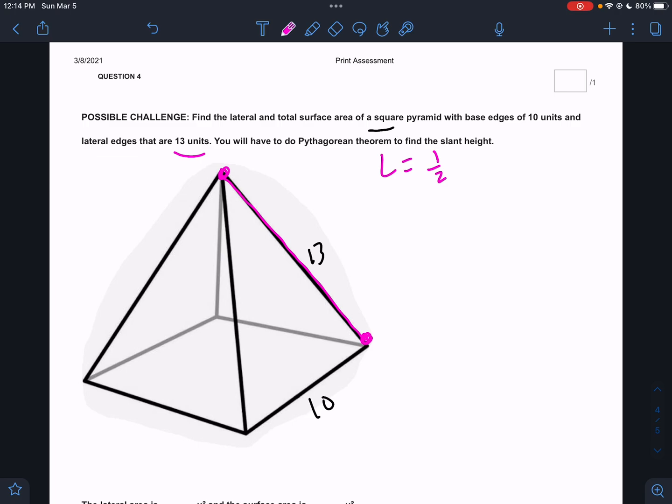Sorry. Sorry. Lateral would be one half PL. And total would be one half PL plus one base. This is a pyramid, guys. Woo! I don't know who messed me up. There's nobody in the room. But I'm sure one of you guys messed me up. That was not my fault. Okay. I'm just kidding, of course. It was totally my fault.